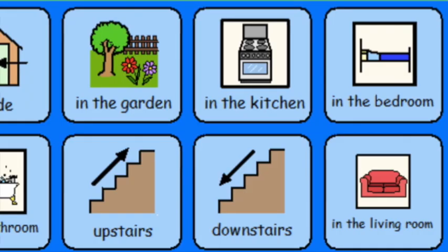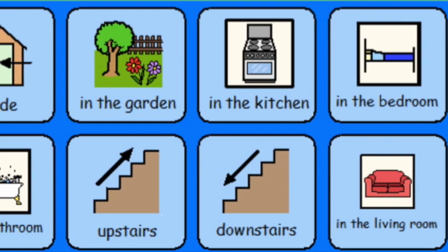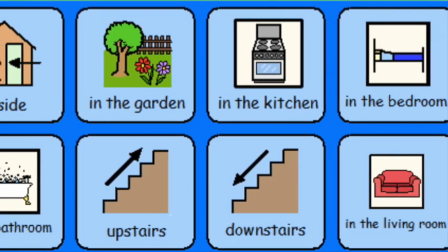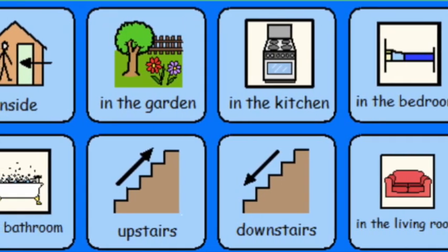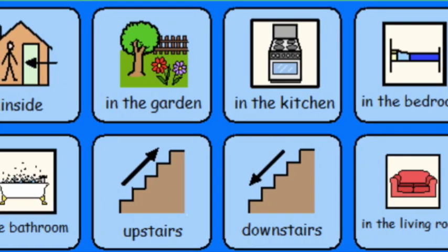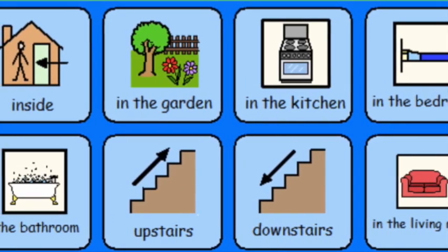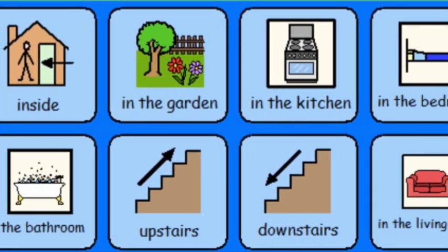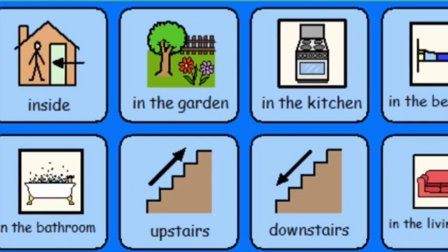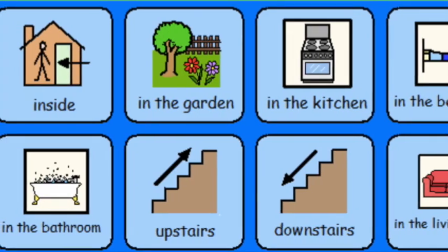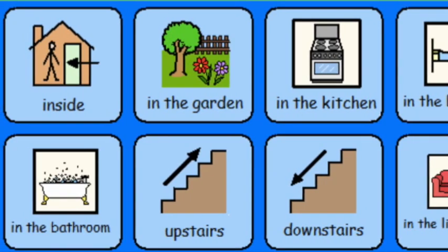One final thing: in the printable symbol document there are some blue symbols. You can use these to turn your three-part sentences into four-part sentences by adding a place on the end — for example: 'Meg is watering plants in the garden.'